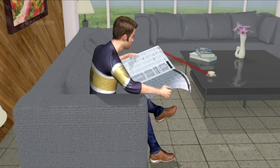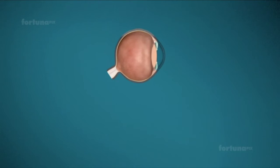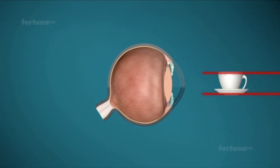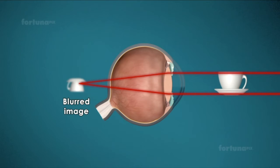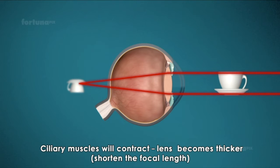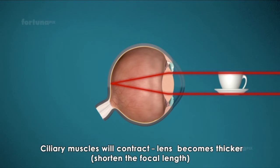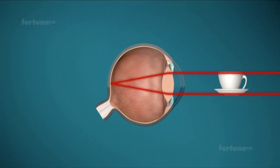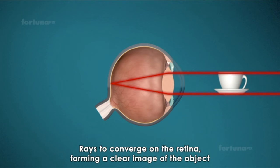When the object is nearer the eye, the rays from the object will fall beyond the retina, creating a blurred image. In this case, the ciliary muscles will contract, and the lens will accommodate by becoming thicker. The thickening of the lens will shorten the focal length, allowing the rays to converge on the retina, forming a clear image of the object.